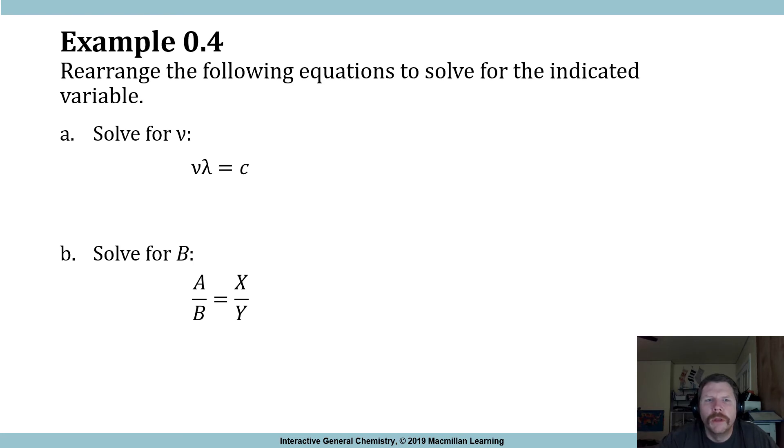So rearrange the equations, solve for the indicated variable. Example 0.4, solve for—example A, solve for v. Divide by lambda. Lambda is crossed out, and we've got v is equal to c over lambda. Okay, solve for b. Well, this one's pretty easy because all that we have to do is invert both sides.